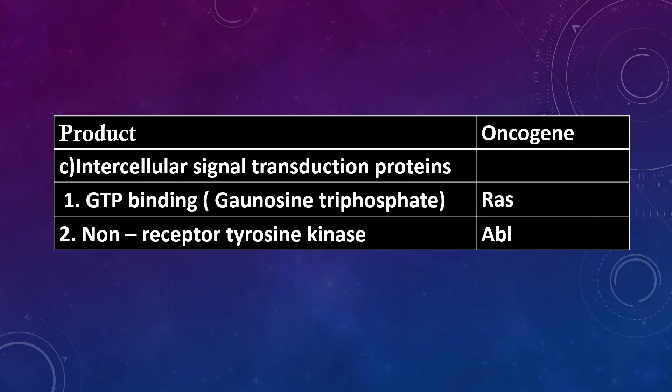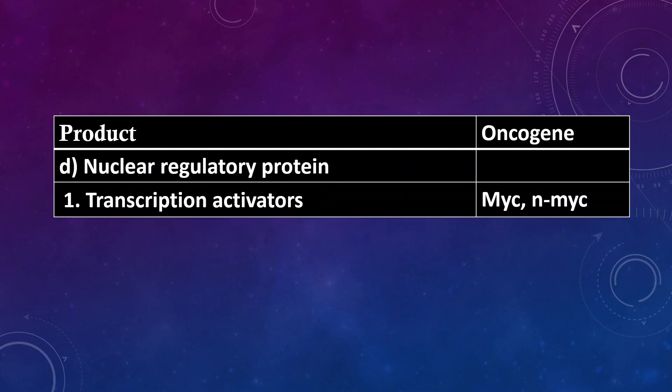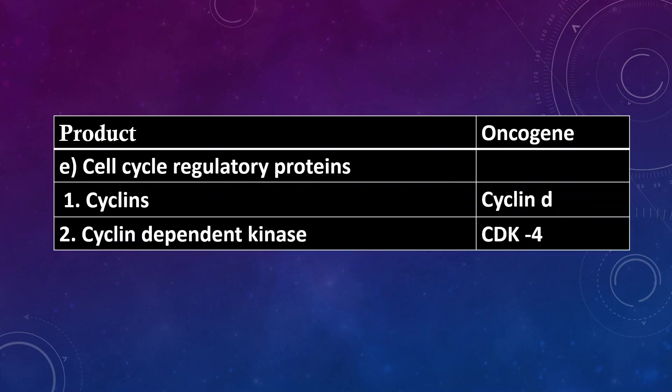Intracellular signal transduction proteins: GTP binding, i.e., guanosine triphosphate — oncogene is RAS. Non-receptor tyrosine kinase — oncogene is ABL. Nuclear regulatory proteins: transcription activators — oncogene is MYC.